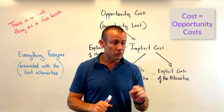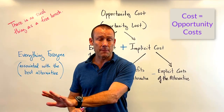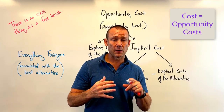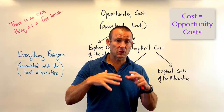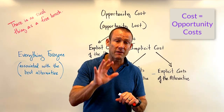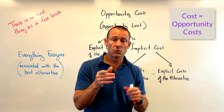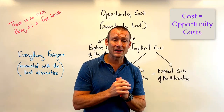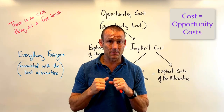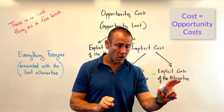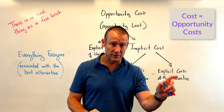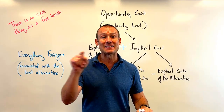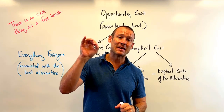To an economist, there is no difference between cost and opportunity cost. In class, when we get into theory of the firm and talk about average total cost, average variable cost, and all kinds of costs, students often ask whether we're talking about opportunity cost. The answer is yes — there is no difference, because to an economist, cost is opportunity cost.